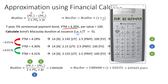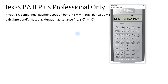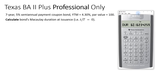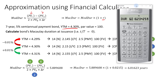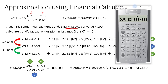So those are the four ways of calculating Macaulay duration. The last method is only available for the professional version of the calculator, but if you have it, it's convenient. If you don't have the professional version, you can easily approximate using the third method, which is much easier to remember than the closed form formula or the general formula.